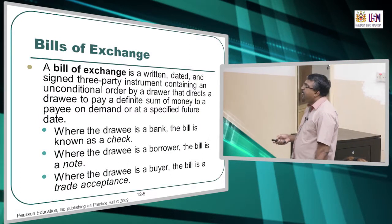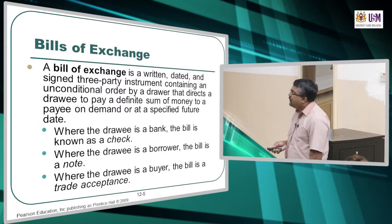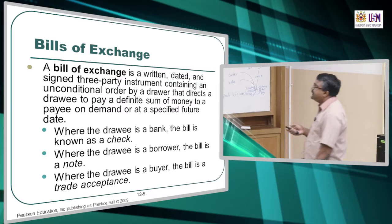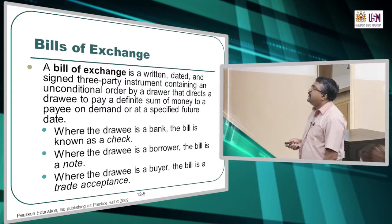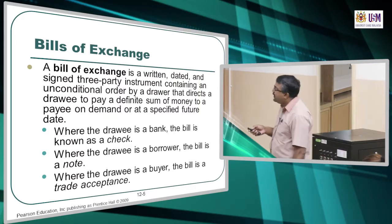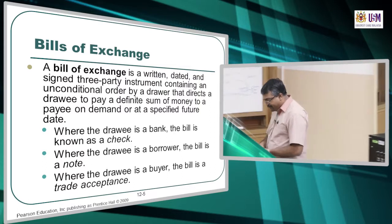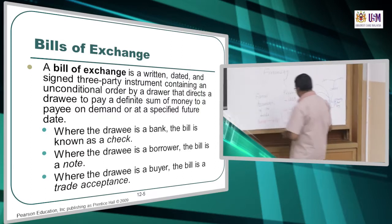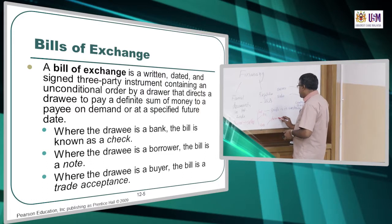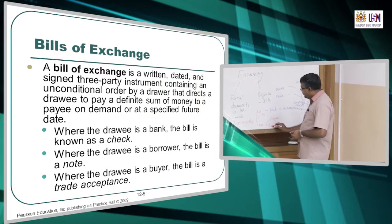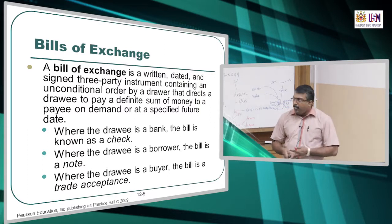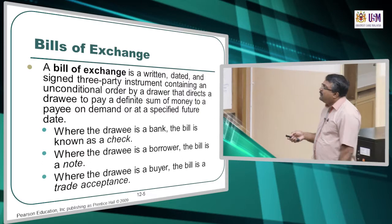The bill of exchange is a written, dated and signed three-party instrument containing an unconditional order by a drawer. Here are some examples which you can also see from your textbook. We have two terms to learn today: drawer and drawee. Where the drawee is a bank, then the bill is called a check.